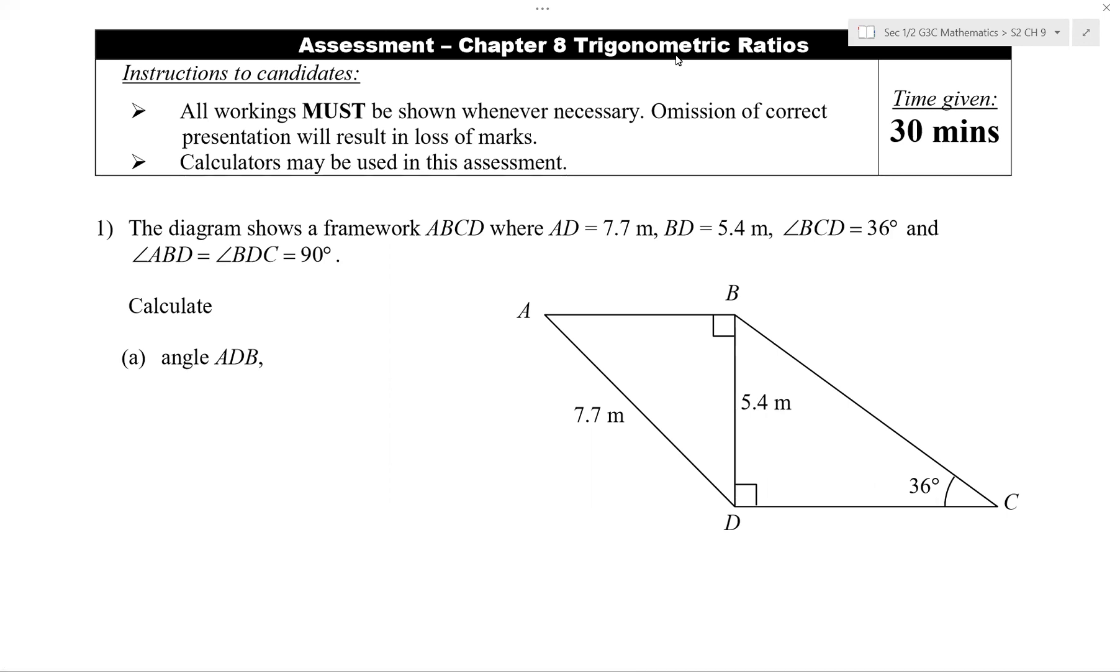Pythagoras theorem, you know. A squared plus B squared is C squared. Trigo. So if you have difficulty remembering, quickly write down TOA, CAH, and SOH.